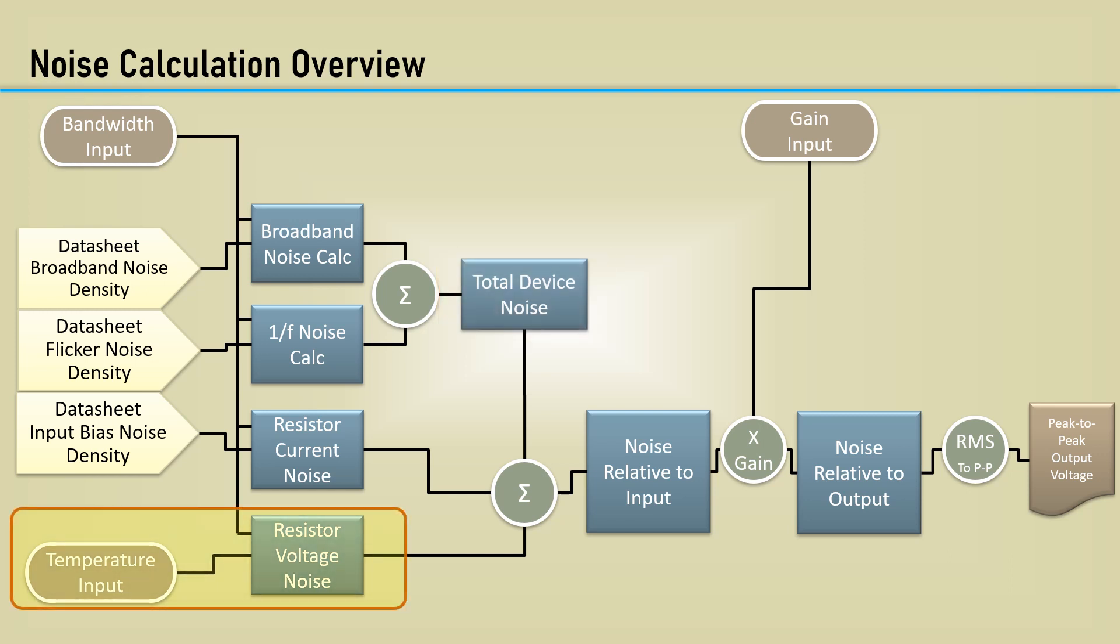The resistor voltage calculation has a temperature and bandwidth input. Everything up to this point is noise relative to the input. We simply multiply that up by the gain, then use statistics to approximate a peak-to-peak output voltage.